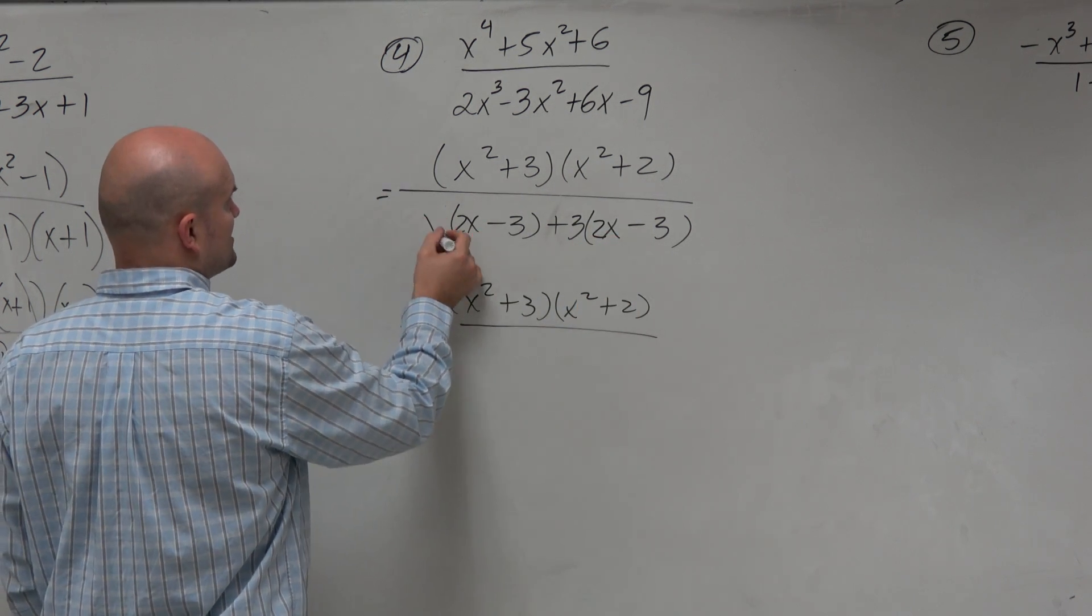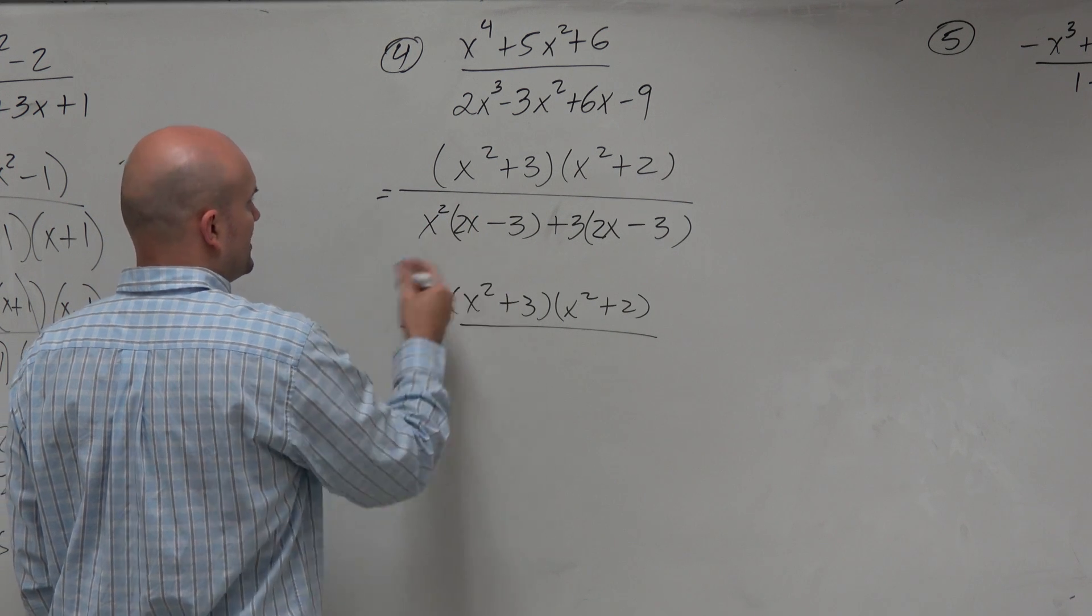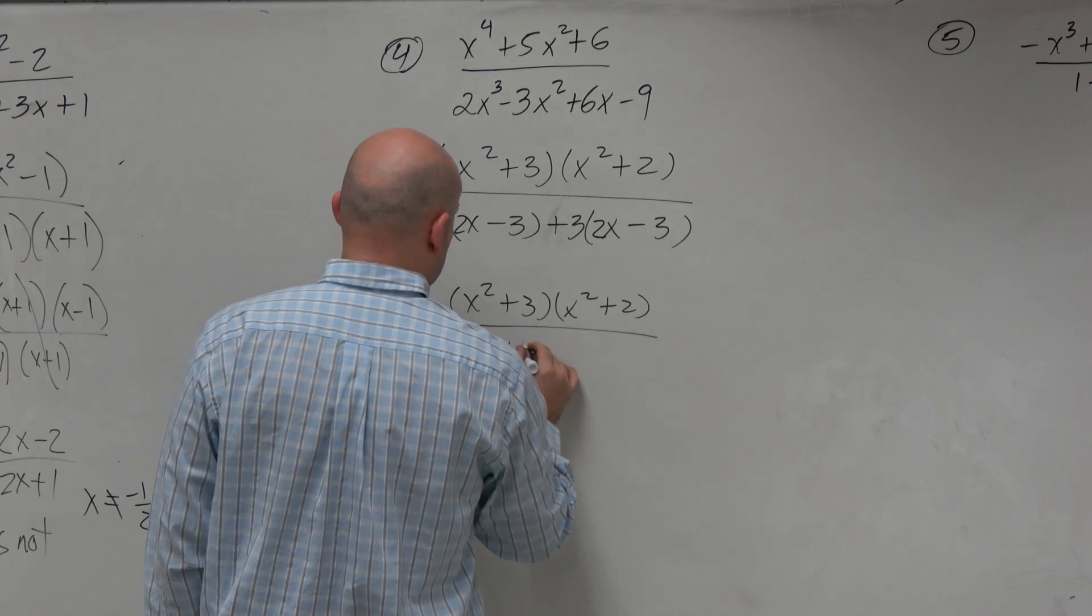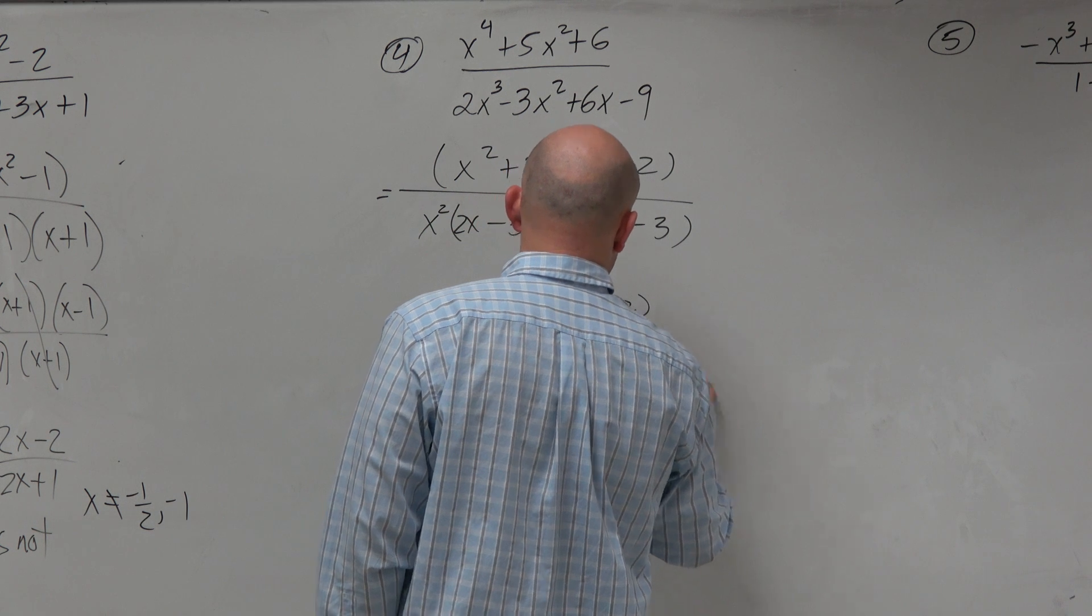So I can only factor out a what? Yeah, there you go. There, there. OK. So I have an x squared plus 3 times 2x minus 3.